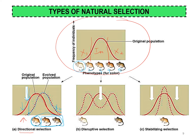For disruptive selection, the intermediate group — the middle — is reduced in number; that is why we have two peaks. Extreme group one and extreme group two increased in number after a few generations, while the intermediate group is lost. Stabilizing selection shows that the intermediate group maintains in the population and both extreme groups are lost from the population.